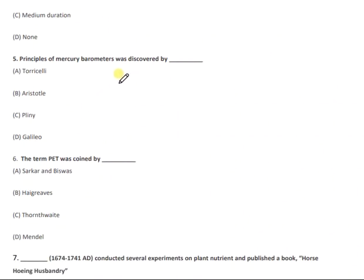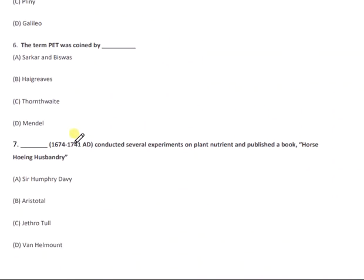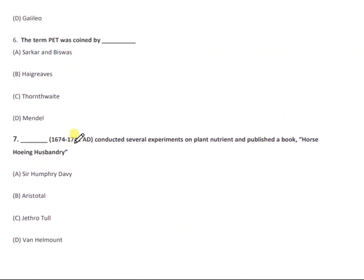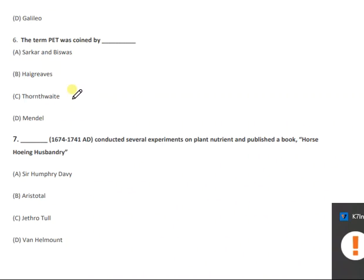Question 5: The principle of the mercury barometer was discovered by whom? The right answer is option A — Torricelli. Question 6: The term PET was coined by which scientist? The right answer is option C — Thornthwaite.